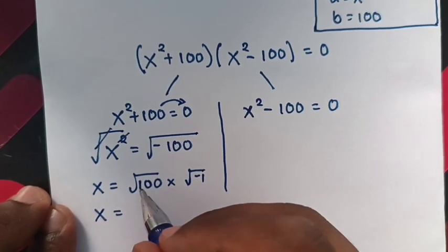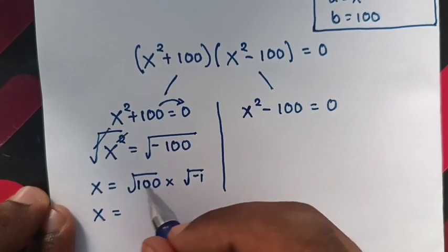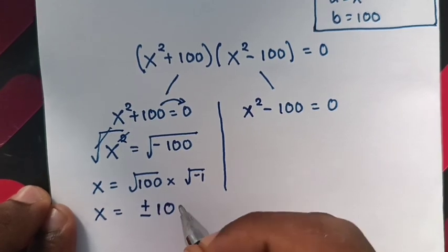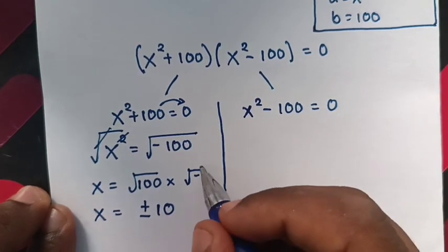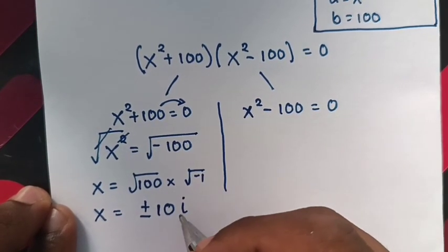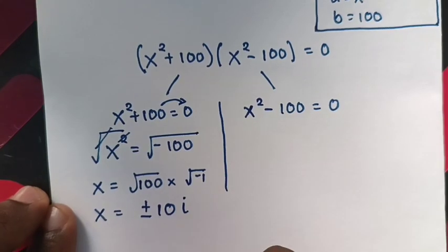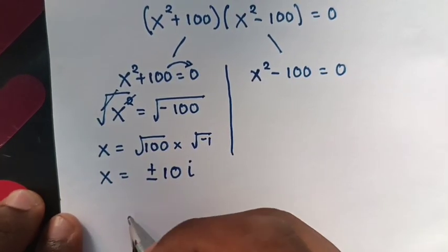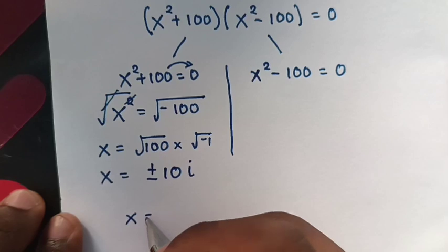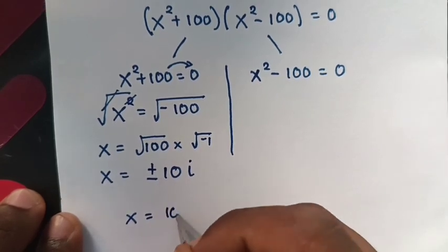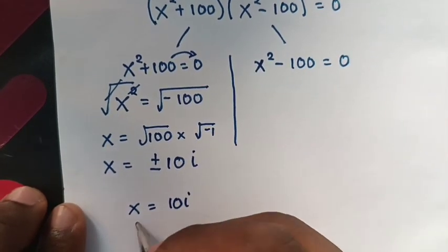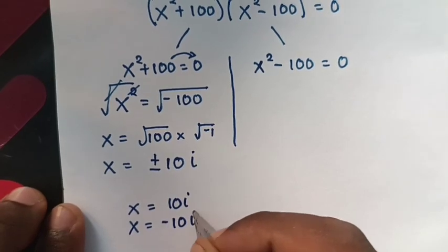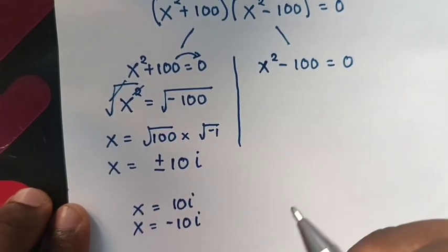So x equals plus or minus the square root of 100, which is 10, times the square root of negative 1, which is i. Therefore x equals plus or minus 10i. The two values from this case are x = 10i and x = −10i.